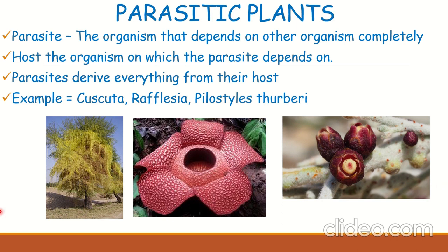These parasitic plants derive everything from their host and either kill the host completely or cause a lot of damage. If a parasite starts growing on a healthy tree, all the food prepared, water, and minerals absorbed would be taken away by the parasite. Once taken, the tree has nothing left, leading to a lot of damage and sometimes even the death of the host tree. Parasitic plants take a lot and give nothing.